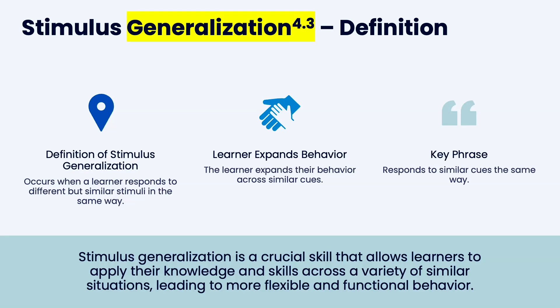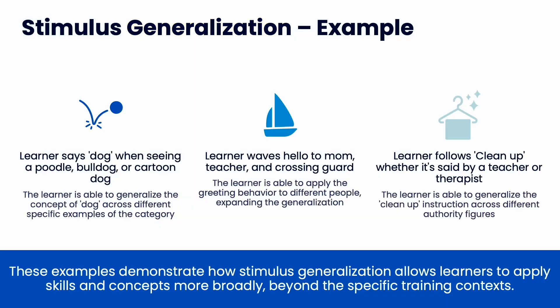Stimulus generalization occurs when the learner responds to different but similar stimuli in the same way. This expands behavior — it allows us to grow our behavior. The key phrase is responding to similar cues in the same way, and it's a crucial skill. When you've taught a behavior and they respond correctly, now we want to generalize it to other contexts and environments — we start loosening that control. So saying dog when you see a poodle, bulldog, or cartoon dog — dog is a great one because the stimuli for which it's appropriate to say dog is so broad.